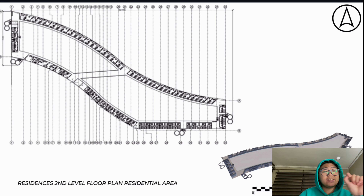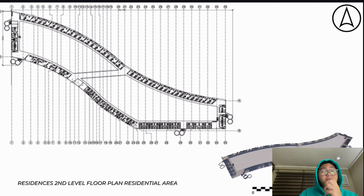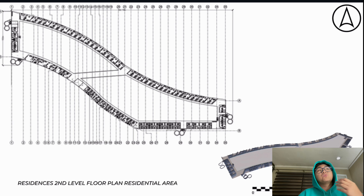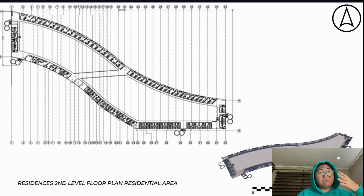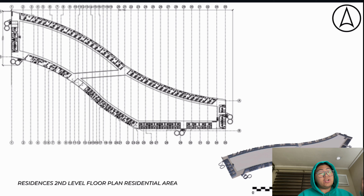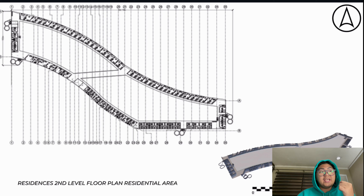This is the second-level floor plan. This is actually the 62 rooms for the floor. There are four fire exits located on each side, and on the middle part, that line is actually an access point.